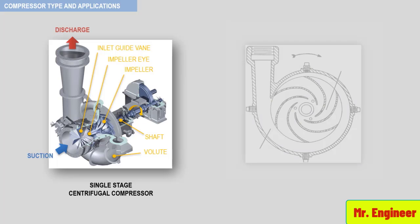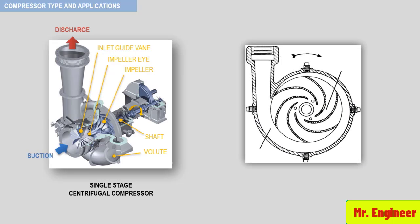Here you can see a front cut view of the compressor. The discharge is located here. The impeller, the eye of the impeller, the blades, and the volute. Notice here how the volute is shaped like a never-increasing spiral.